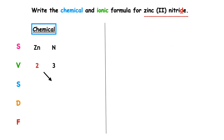Swap the valencies over. The highest number both can be divided by to keep it a whole number is one. So the chemical formula is Zn — how many of those have we got? Three. So we write a small three after the chemical symbol. The chemical symbol for nitrogen is N — how many? Two. So the chemical formula is Zn3N2.